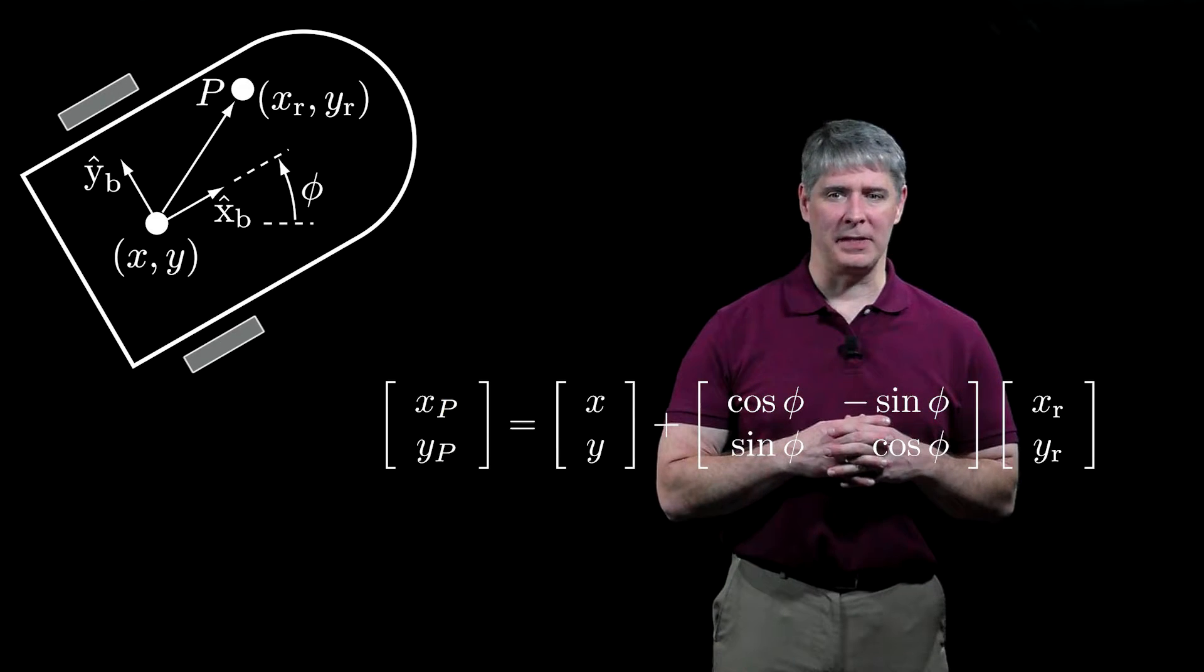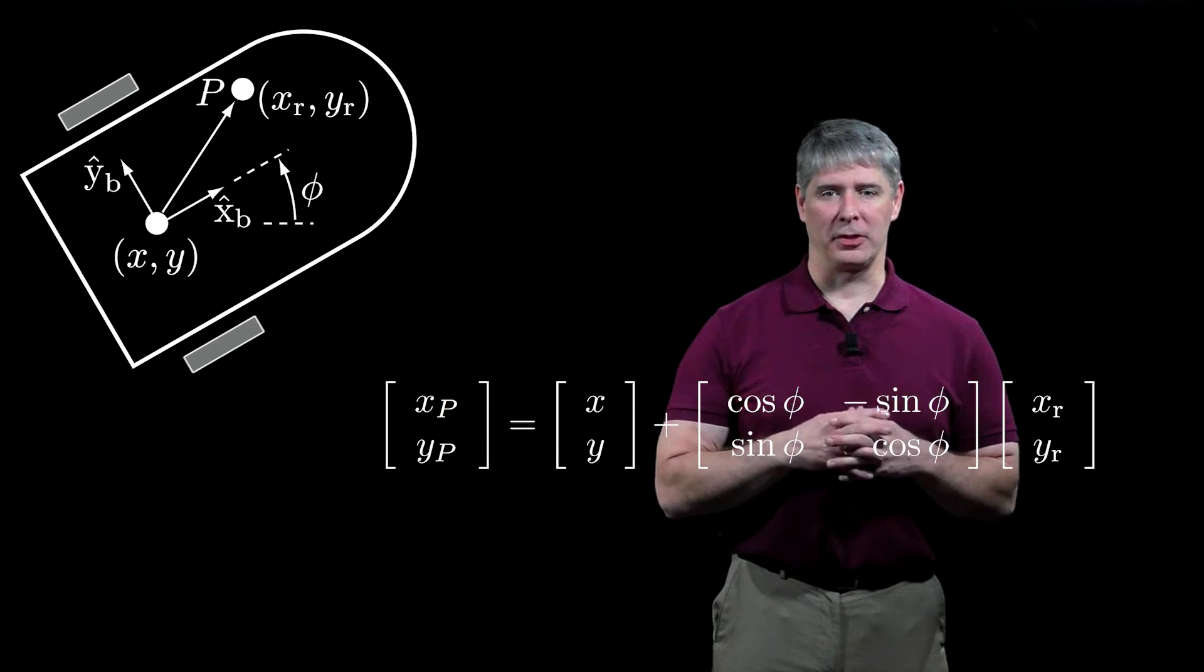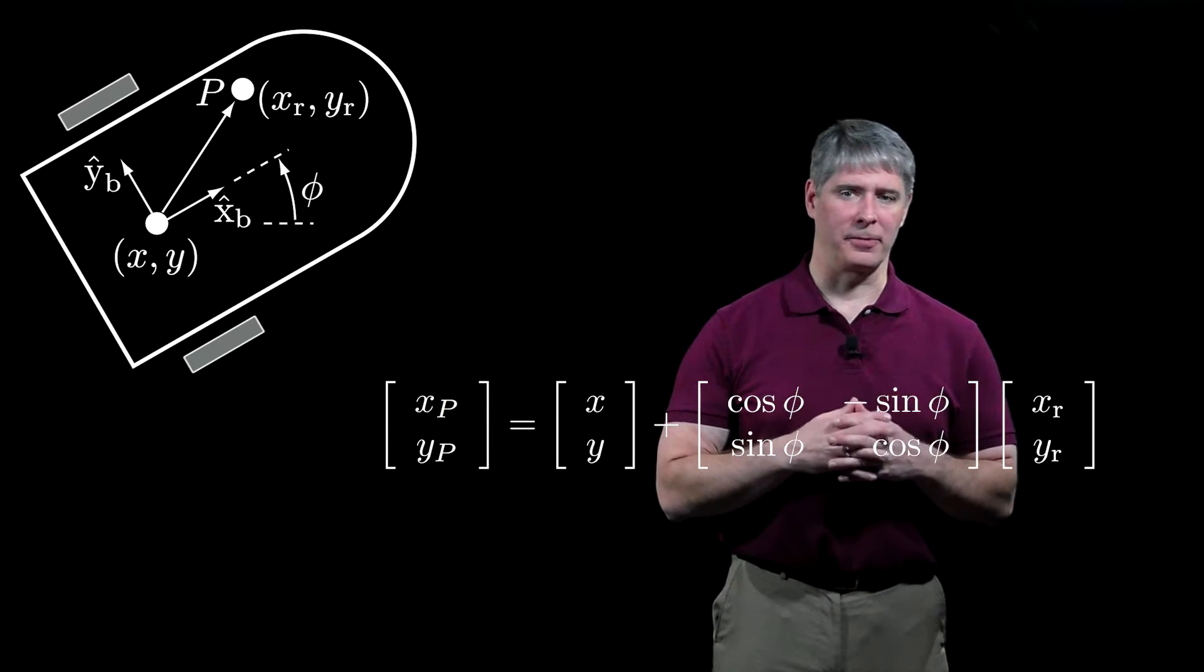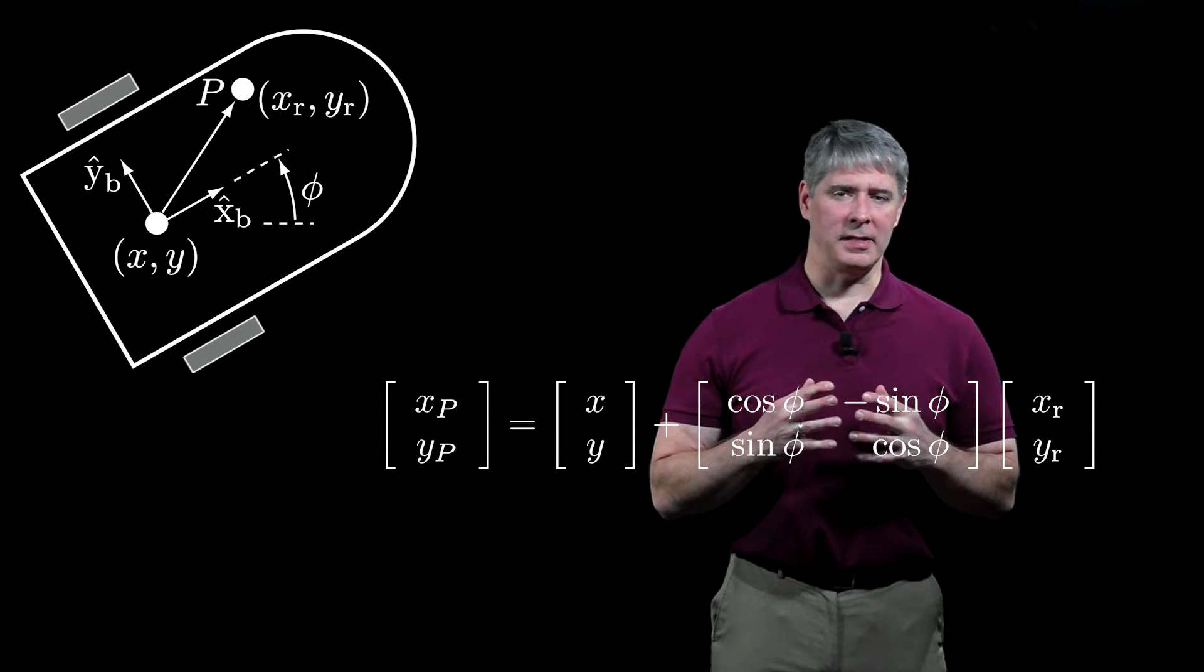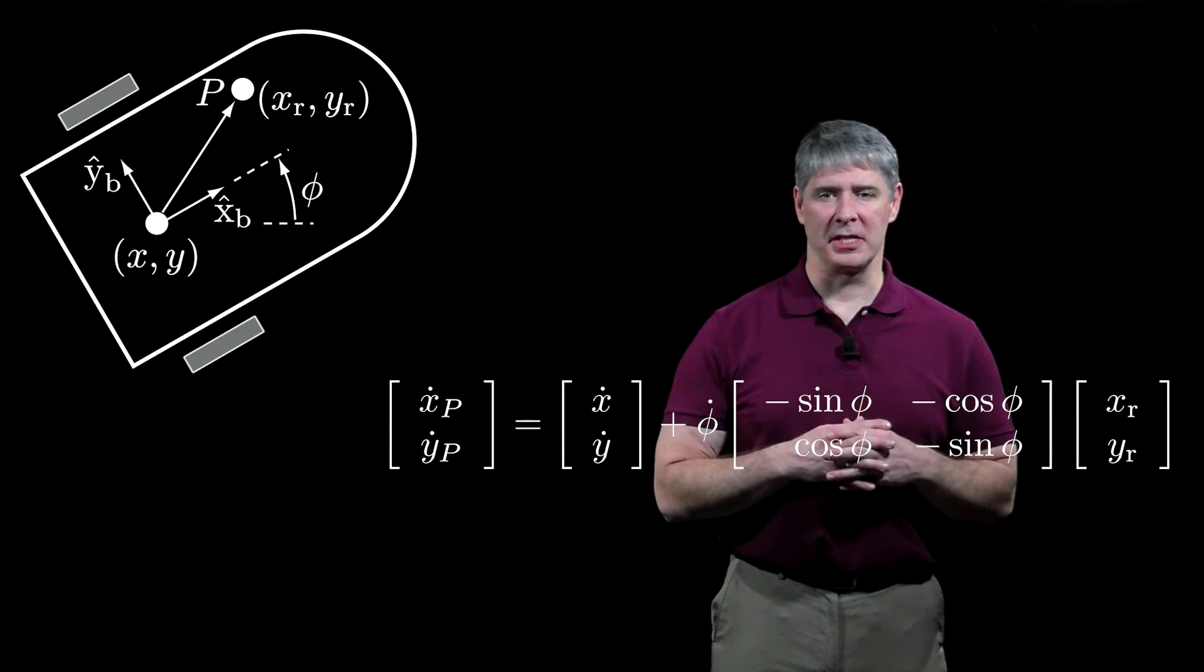The position of the point P in the space frame is given by the x-y position of the chassis, plus the vector to the point P expressed in the space frame. The velocity of the point P is simply the time derivative of its position.